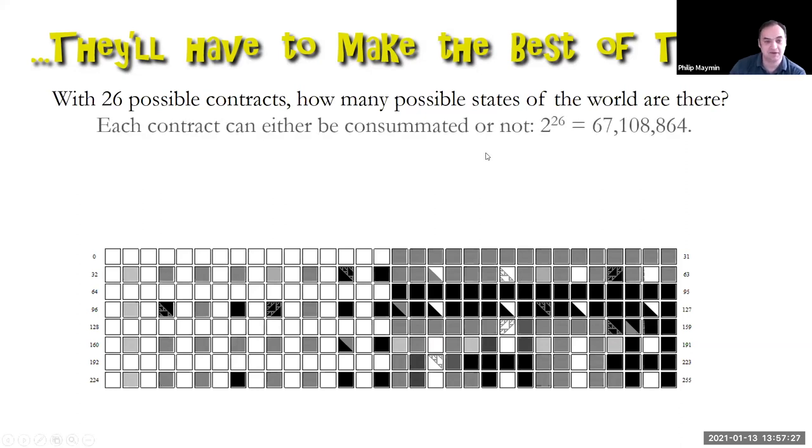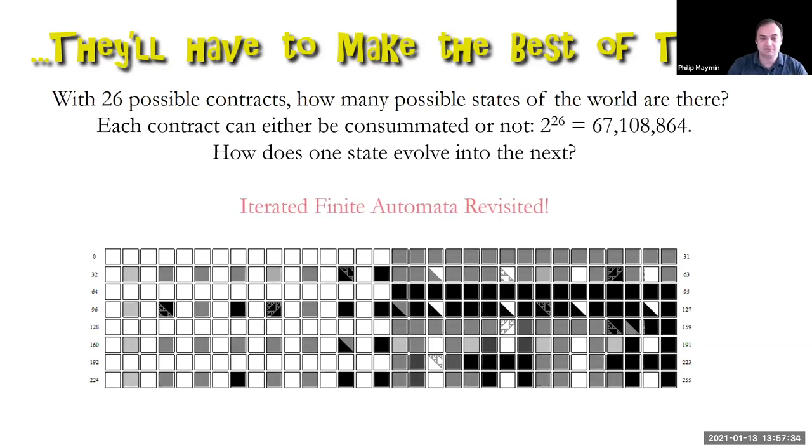Each of the 26 contracts could be either on or off. Two to the 26. Perfect. That's exactly right. Two to the 26, 67 million. How does one state evolve into the next? Well, iterated finite automaton, same as the minimal financial models to the rescue. Look at, these are all of the iterated finite automata, all possible rules. Can you find the one that's complex? You really have to squint. It's not any of these white ones. It's not any of these gray ones, but if you see this guy, it's hard to tell, but there's actually something complex going on in that one.